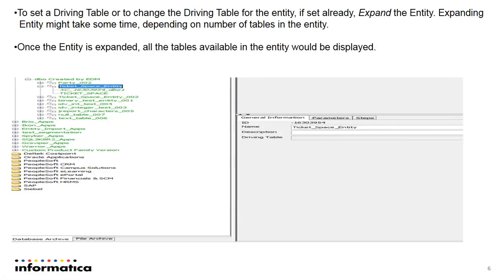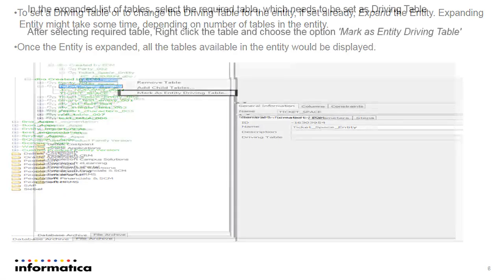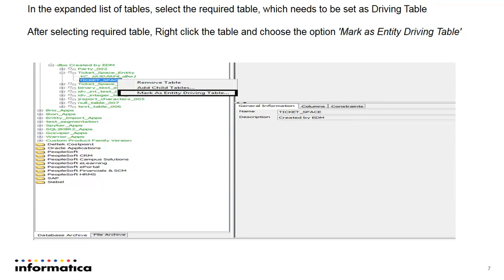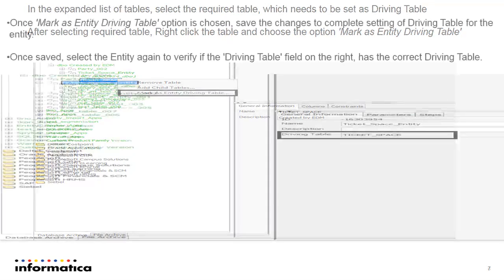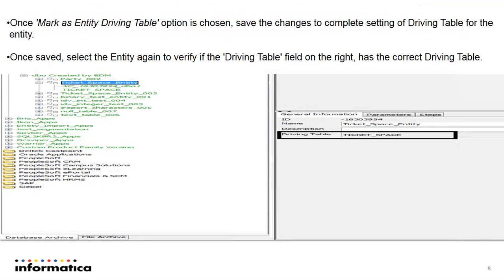To set the driving table for the entity, expand the entity — it will list all the tables under the entity. Choose the parent table that you want to set as a driving table. Right-click on the table and select 'Mark as Entity Driving Table.' Once that option is selected, the table will be displayed under the driving table option in EDM. Save the changes, and that table will be marked as the driving table for the particular entity.